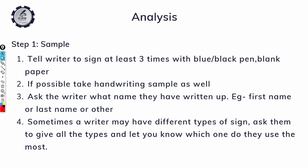The first step is getting the sample. Before the start of this course, I believe you have already watched how to get the sample. You must tell the writer to give three samples and sign at least three times with a blue or black pen. The pen must be a ballpoint pen — not a sketch pen, ink pen, or pencil.